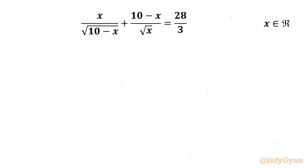Welcome back to InfiGyan friends. In today's video we are having one very interesting and challenging question from Radical Rational Equations. The given equation is x over root(10 minus x) plus (10 minus x) over root(x) equal to 28 over 3, where x belongs to real numbers.